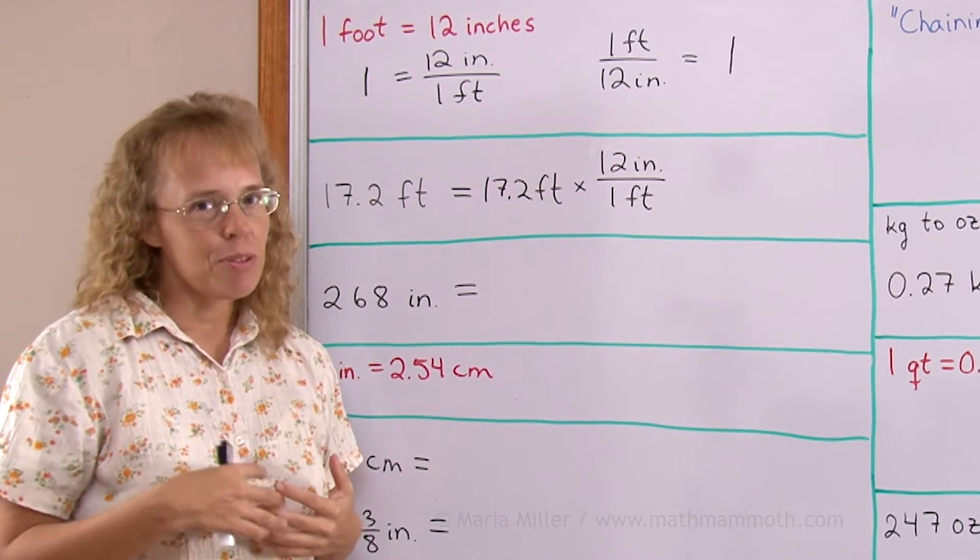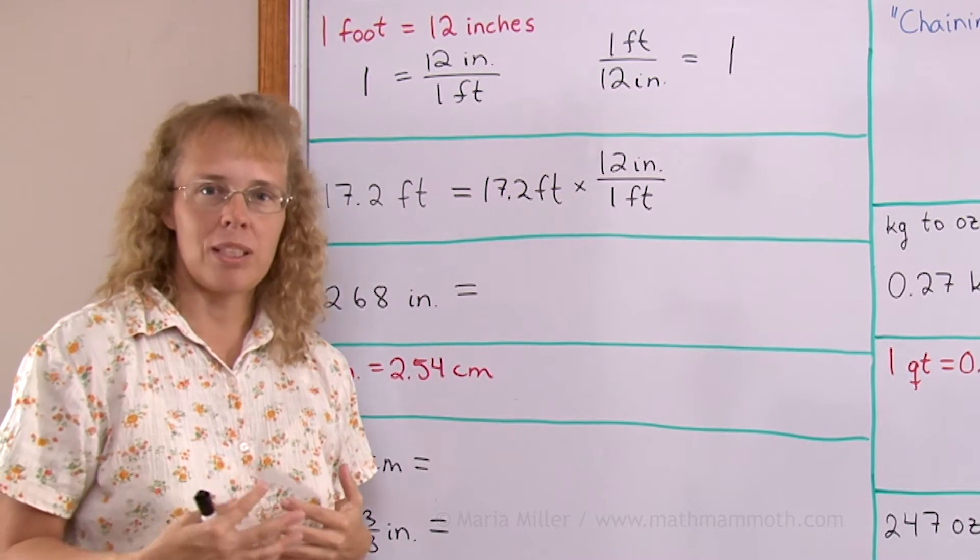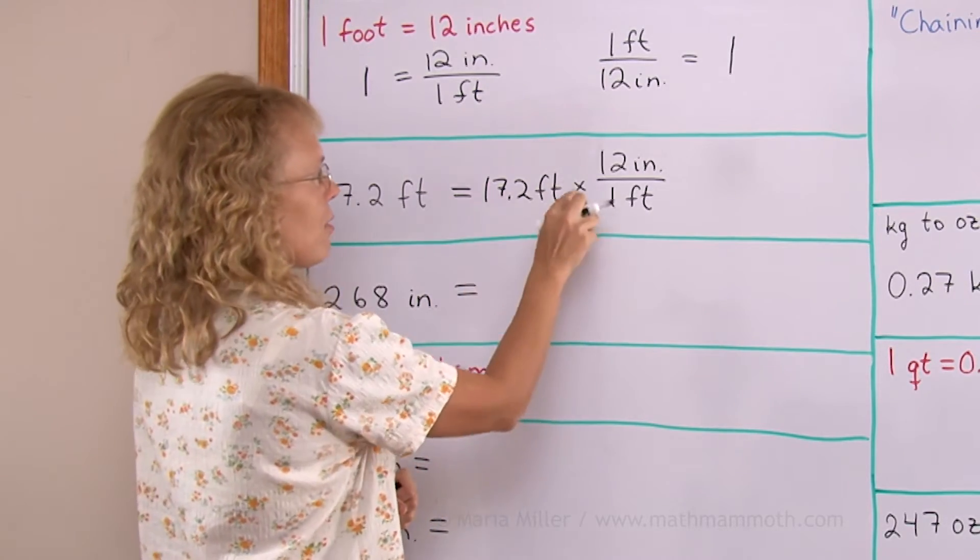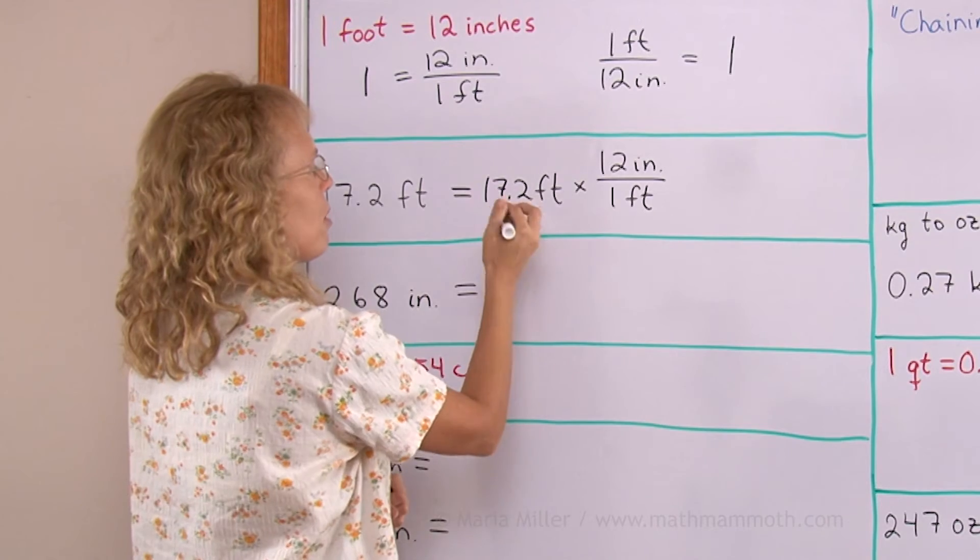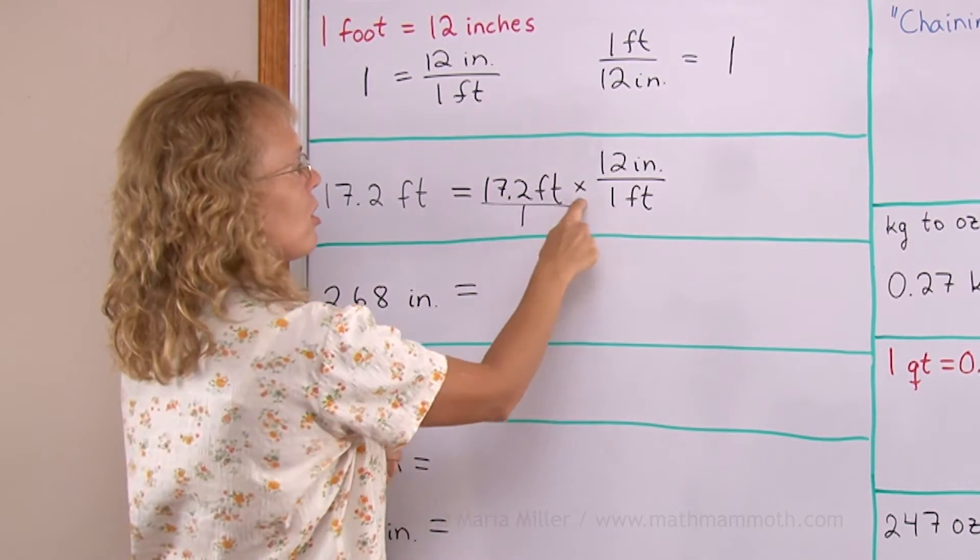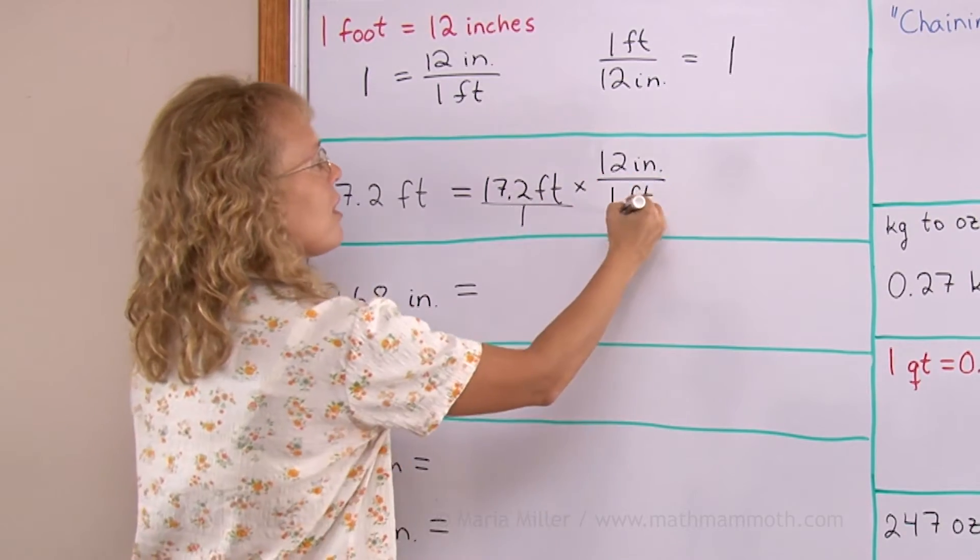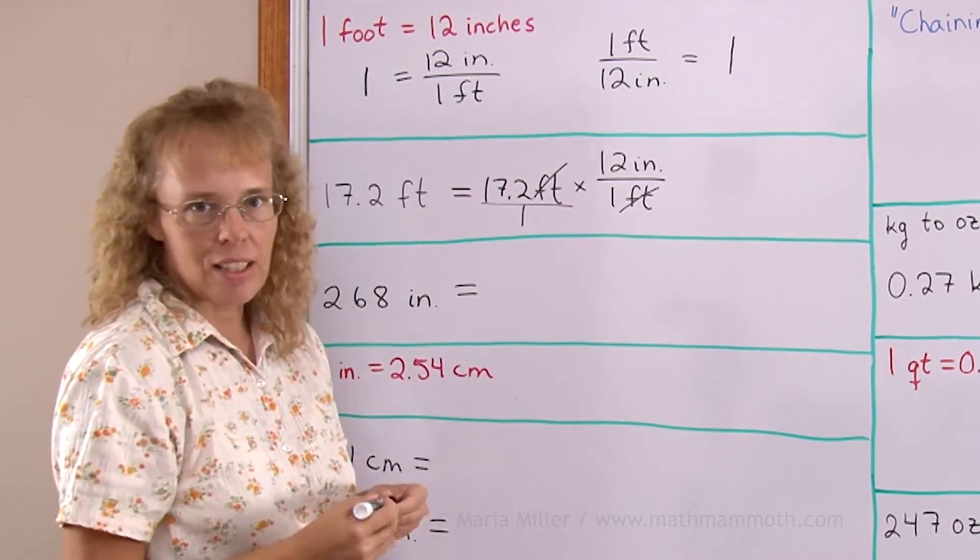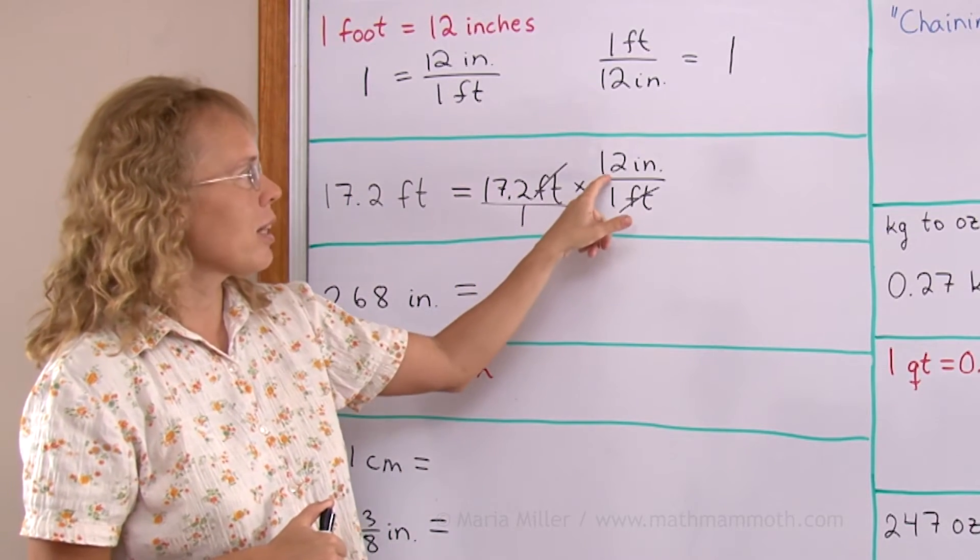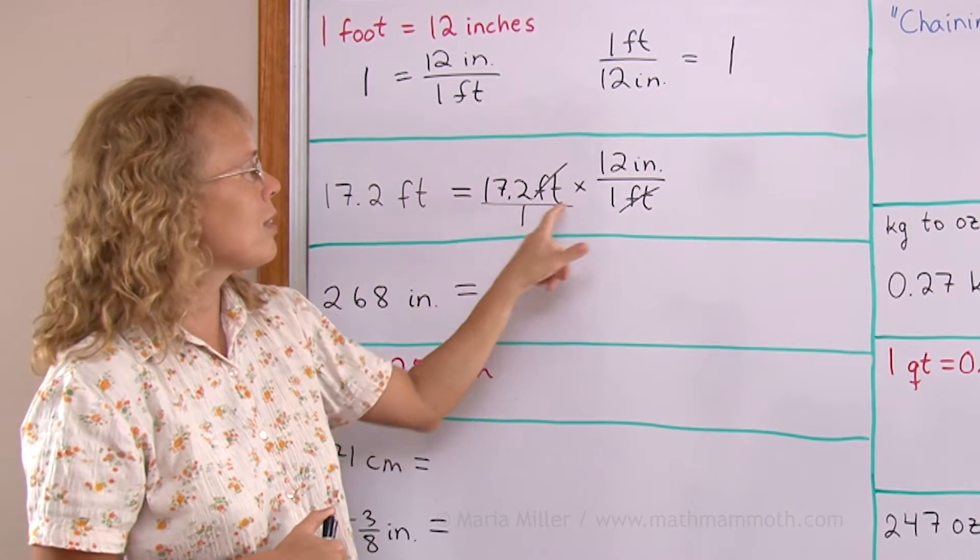To see that, you have to be familiar with, for example, fraction multiplication and fraction simplifying. But remember, you can think of it as a fraction times a whole number or a fraction times fraction. If I put this over one, then it is like fraction times fraction. The feet here will cancel out. Then I have 17.2 times 12 and then inches and here just 1 times 1.